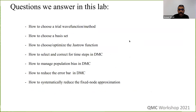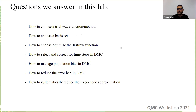Questions we will answer during this lab: how to choose a trial wave function, which method to select for the antisymmetry part, how to define basis sets, what type of Jastrows to choose — one, two, or three-body — how to select the correct time step for diffusion Monte Carlo, what population to select, how to reduce the error bar, and how to systematically assess the quality of your calculations. By the end, you should be able to run any reasonable-sized system using diffusion Monte Carlo confidently.